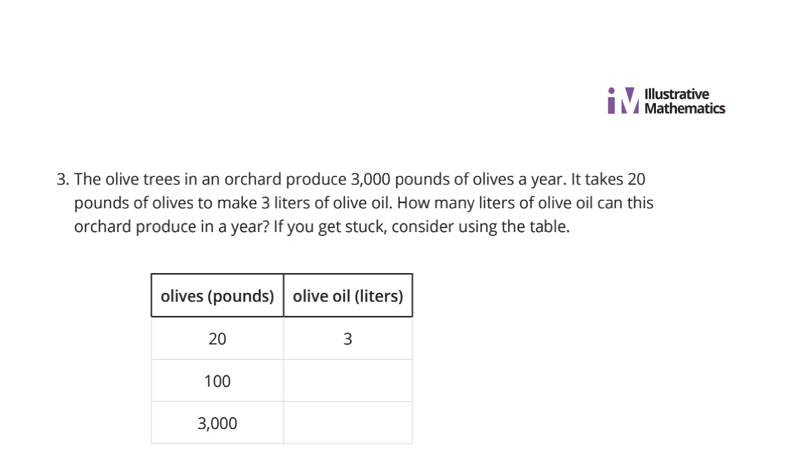Well, we can ask ourselves, how do we get from 20 to 100? We would multiply by 5. So 3 times 5 gets us 15. Then we can ask ourselves, how do we get from 100 to 3,000? Well, if you were to take 3,000 and divide it by 100, you would get multiplying by 30. 100 times 30 is 3,000. So if I take 15 and multiply it by 30, we get 450 liters of olive oil.